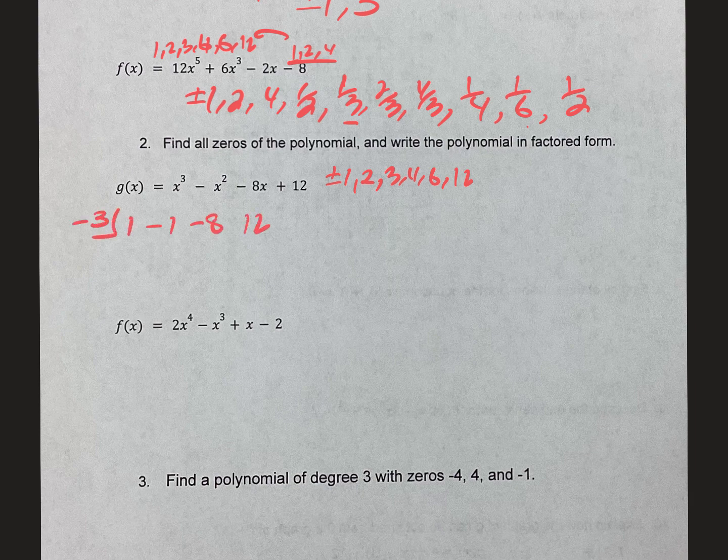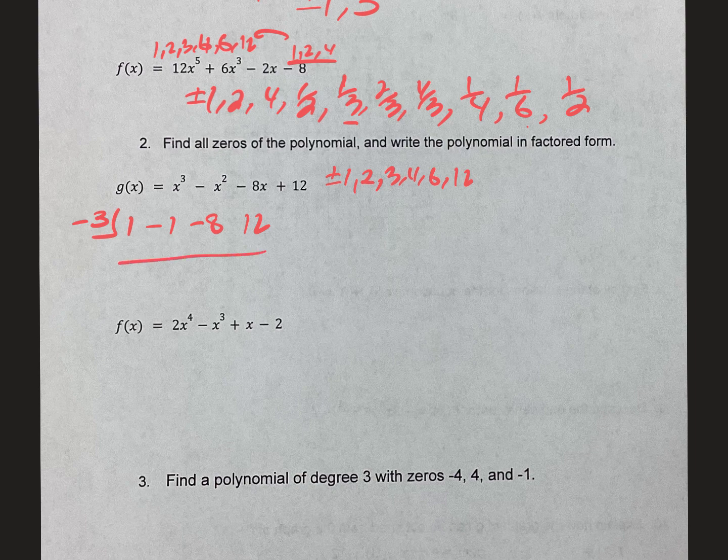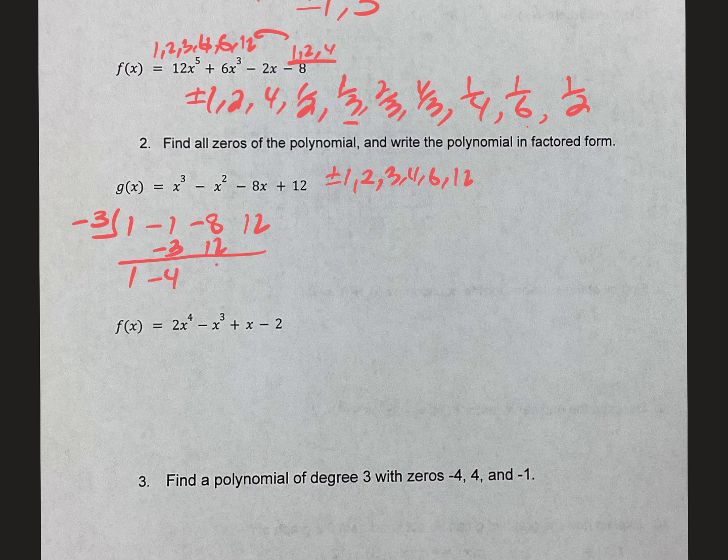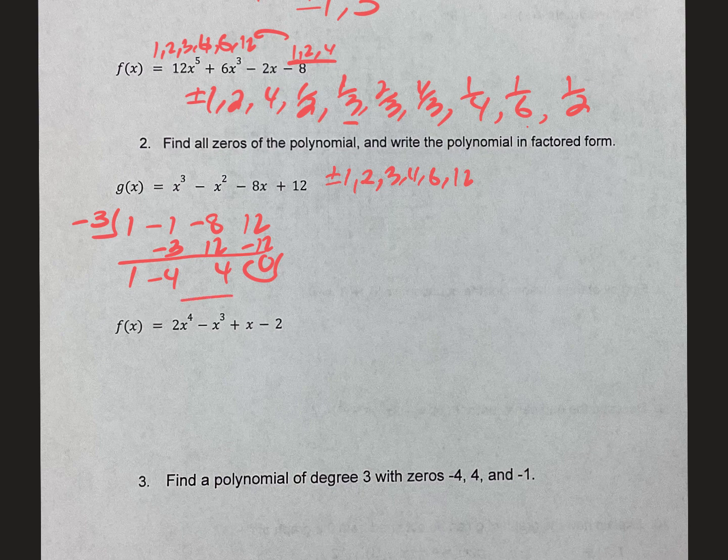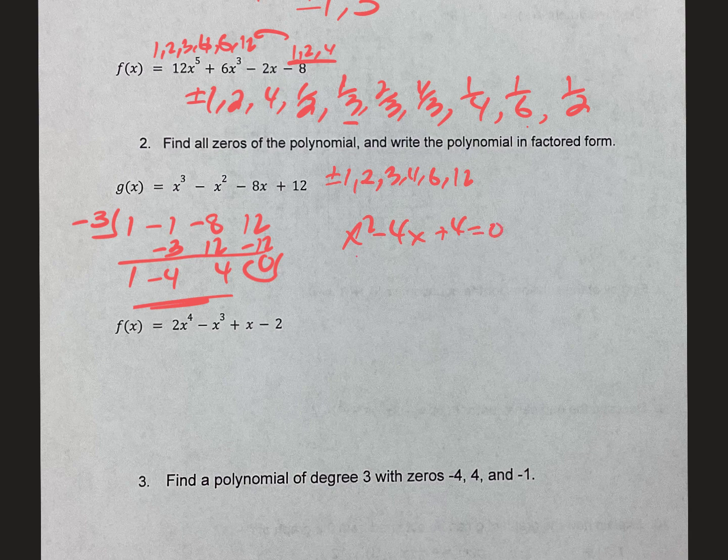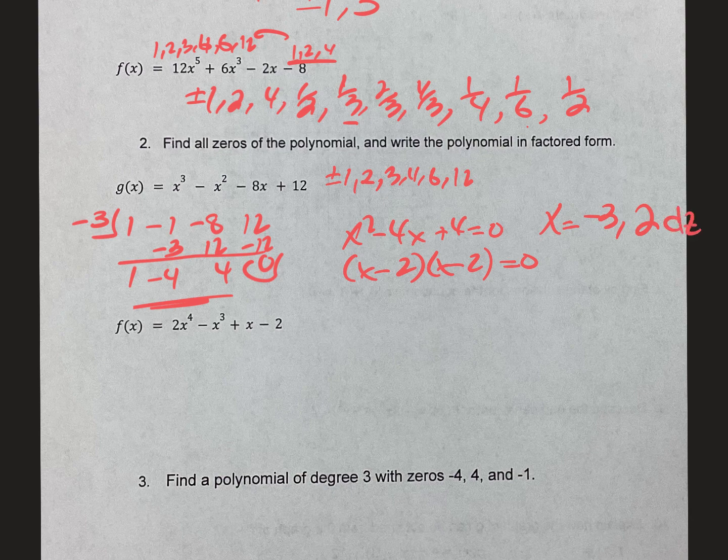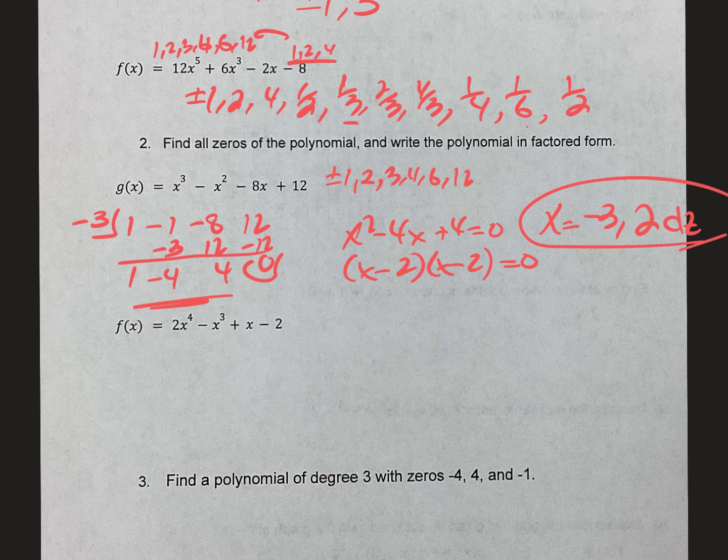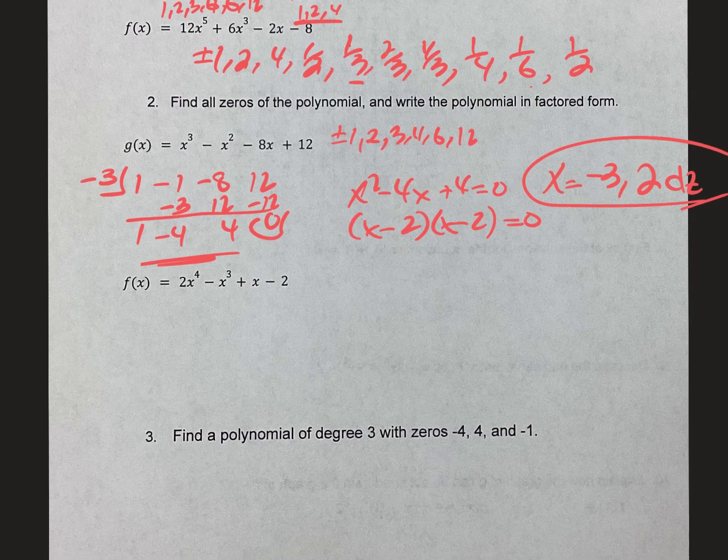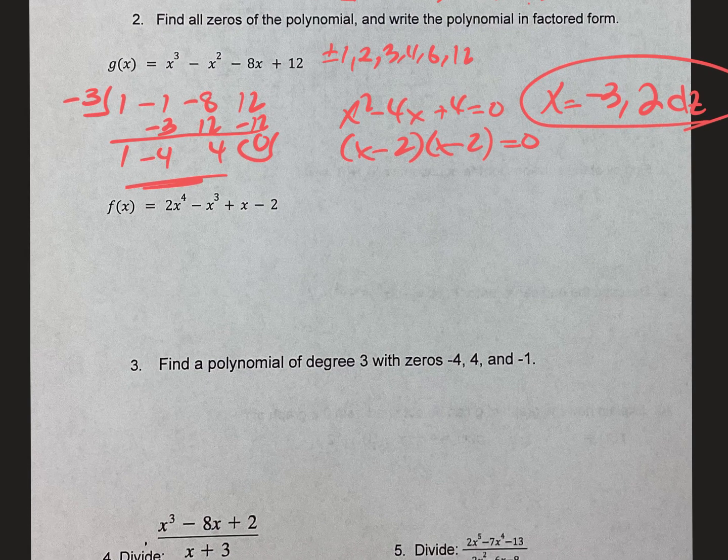It crosses the x-axis at negative 3, which is in my list, by the way. So I'm going to try negative 3 here with my synthetic. And remember, if it is a 0, I will get 0 when I do this. So I'm going to bring that down, multiply, add, multiply, add, and sure enough, I get 0. So I'm going to take this over here to the side and just solve what I have. I'm going to try to factor that, and I can. It'll be x minus 2, x minus 2, or x minus 2 squared.